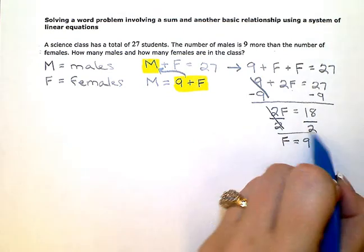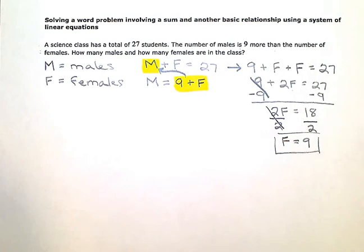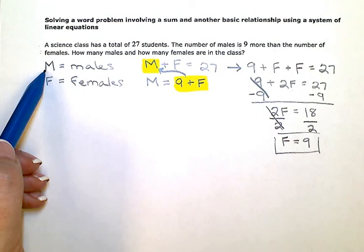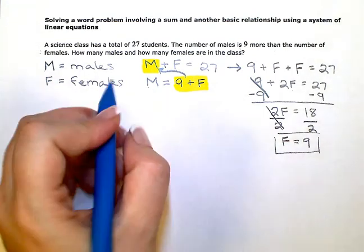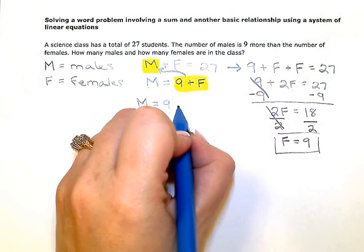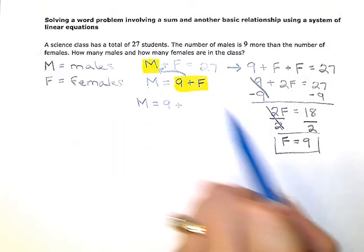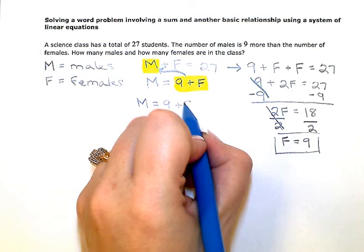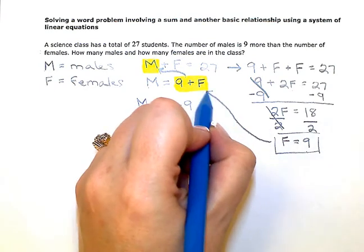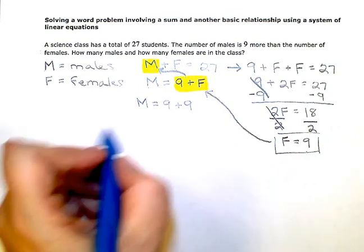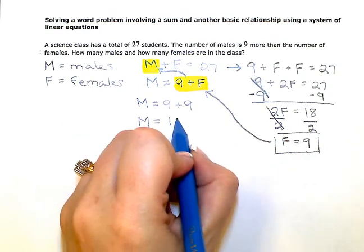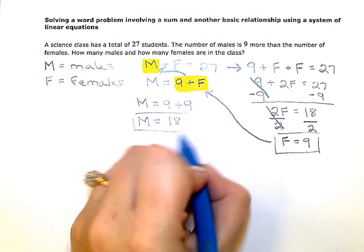So I know there are nine females or nine girls in the class. Now I just need to figure out the males. I know the males are equal to nine plus the females, which I already figured out was nine. So this F value, the nine, I put right up there. When I simplify, nine plus nine is 18. So the number of males is 18.